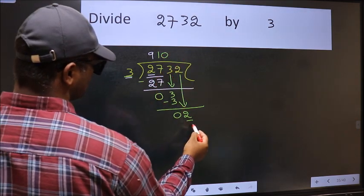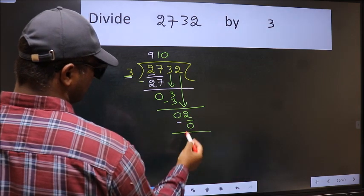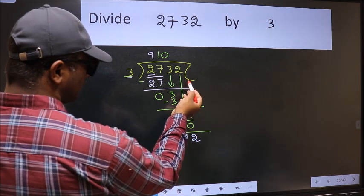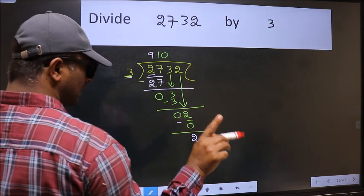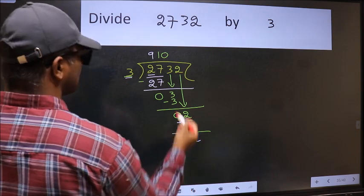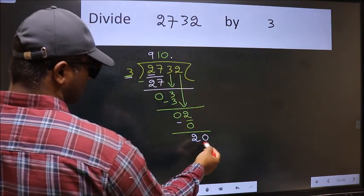So 3 into 0, 0. Now we should subtract. We get 2. Over here, we did not bring any number down. And 2 is smaller than 3. So now we can put dot and take 0. So 20.